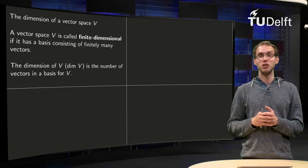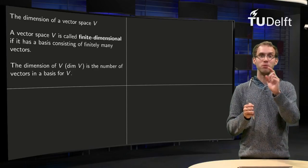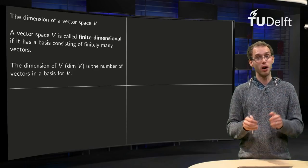So finding the dimension of a vector space is not so hard if you have a basis. Just take the basis, count the number of vectors, and there you are.